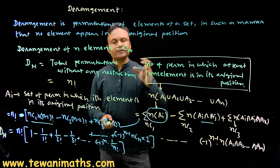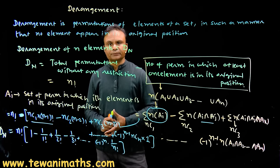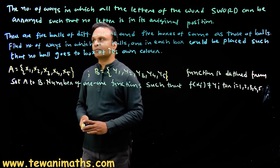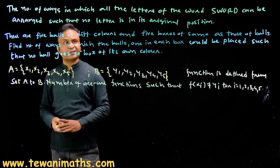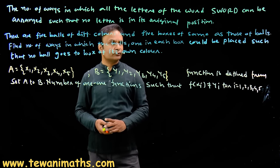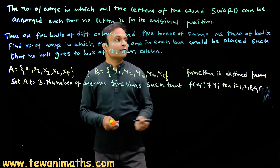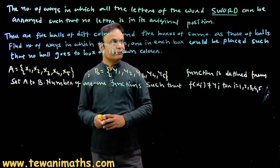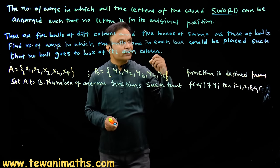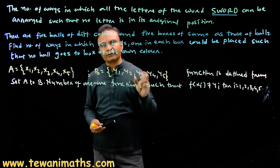Now let's try some questions. We have three statements. The first statement is: find the number of ways in which all the letters of the word SWORD can be arranged such that no letter is in its original position. Clearly this is a derangement question. There are five distinct letters in the word SWORD, and we have to arrange them so that no single letter is in its original place — this is derangement of five objects.